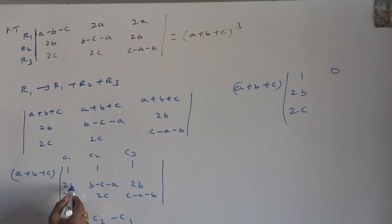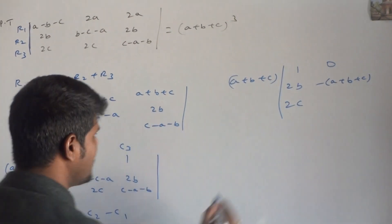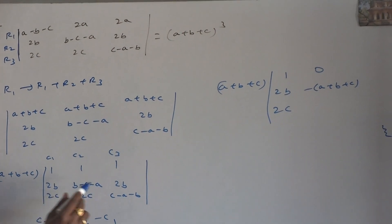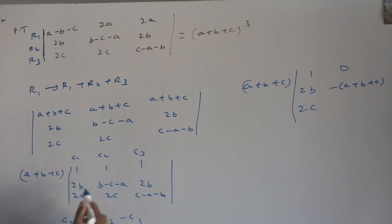Column 2 second element, column 1 second element. Second element if you subtract, what you will get? Minus of A plus B plus C. Because we will get minus B minus C minus A. Take minus common. Column 2 third element, column 1 third element. 2C minus 2C. Zero.